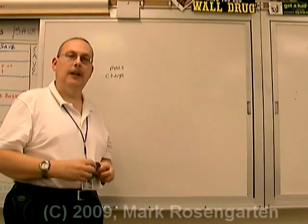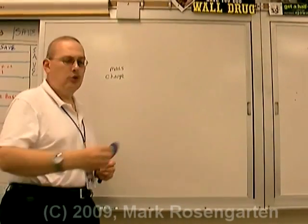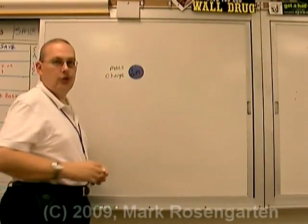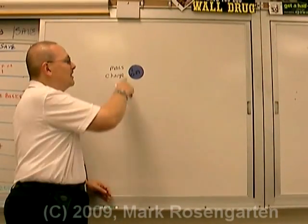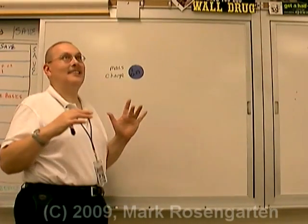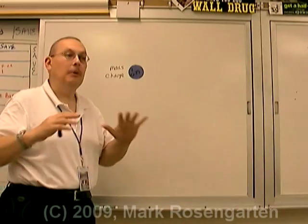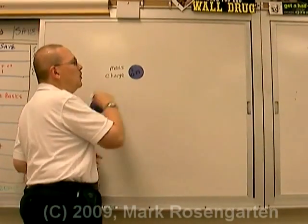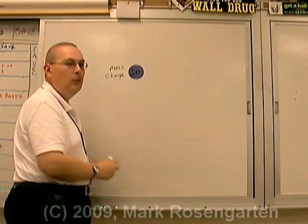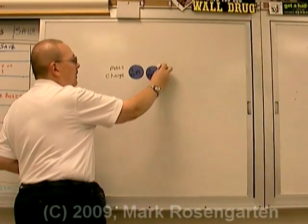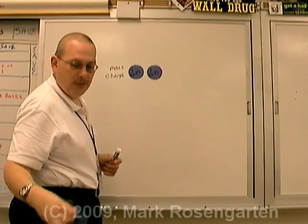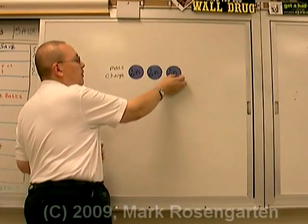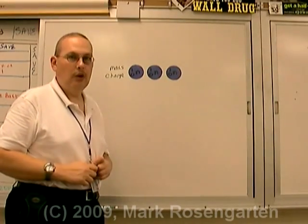The other particle found in the nucleus is the neutron. The neutron has a neutral charge — no charge at all, hence the name neutron. It has the same mass as a proton: one atomic mass unit. Technically it's a tiny bit higher than that, but we just ignore that extra little bit. So one neutron has a mass of one amu and no charge; two neutrons have a mass of two amu and no charge; three neutrons have a mass of three amu and a charge of zero.